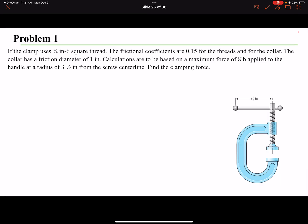Hello everyone, in this video we're going to solve a problem for power screw. If the clamp uses 3/4 inch 6 square thread, it's giving us information that the diameter is 3/4 of an inch and 6 threads per inch.